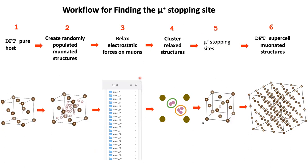We then create clusters using the relaxed structures, and from the size of the clusters and the minimum energy structure in each cluster we identify potential muon stopping sites. All of this is done assuming that the muon does not perturb the host. Once the muon stopping sites are identified, we perform a further density functional theory relaxation to estimate the host distortion if we are interested in understanding how the muon distorts the sample.